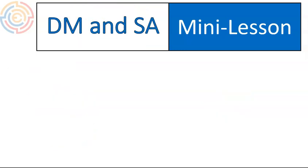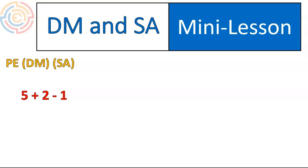Here we go again — division/multiplication and subtraction/addition. I want to spend a little bit more time with this, because this is the area where most students make mistakes when first learning the order of operations. When I have 5 plus 2 minus 1, this only has addition and subtraction. If it only has addition and subtraction left, then we just go from left to right in whatever order it appears. 5 plus 2 is 7, and 7 minus 1 is 6.